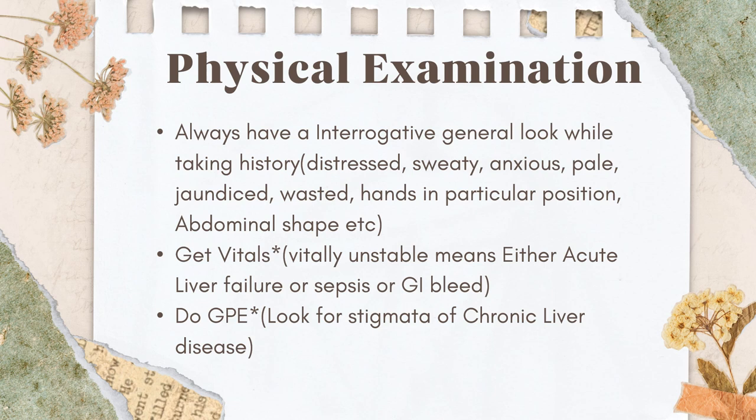Perform a detailed general physical examination. Top priority: stigmata of chronic liver disease — asterixis, clubbing, leukonychia, scratch marks, spider angiomas, temporal wasting, gynecomastia, abdominal distension, testicular atrophy in males, female-pattern pubic hair, and limb wasting. Also look for pallor, lymphadenopathy, and hepato-splenomegaly — splenomegaly is especially common in hemolytic anemia. Palpate joints for connective tissue disorders, as these can be associated with hemolytic anemia.